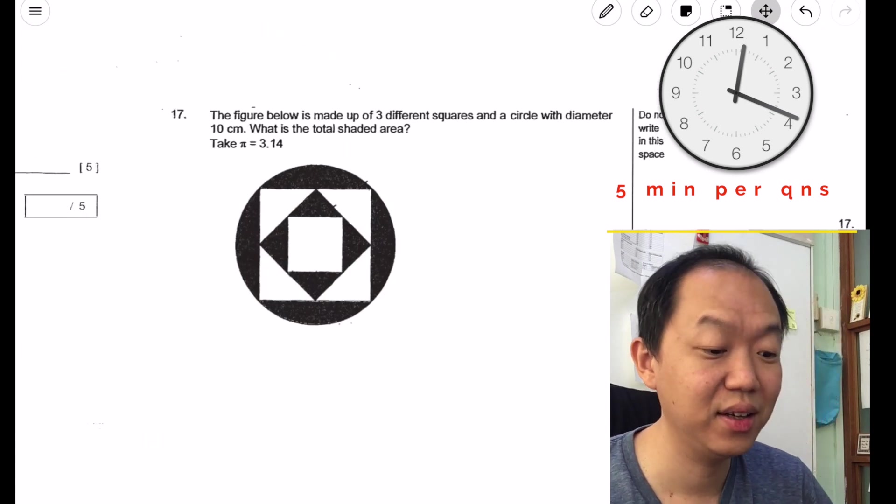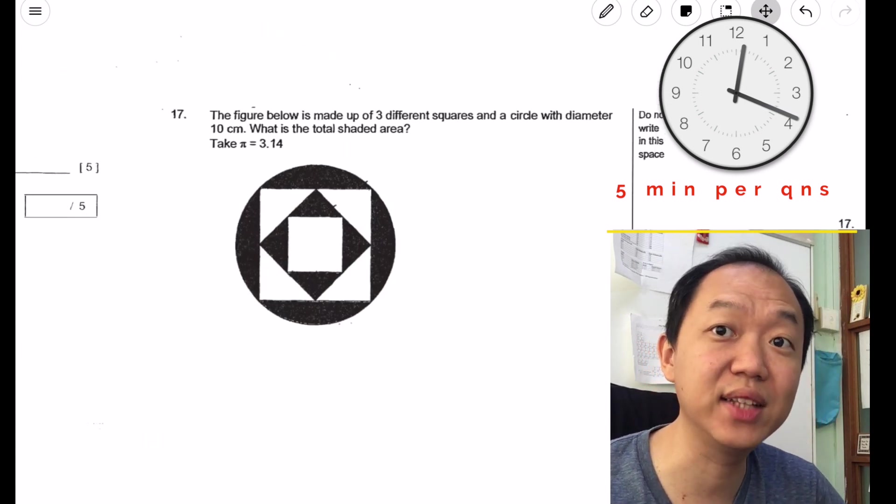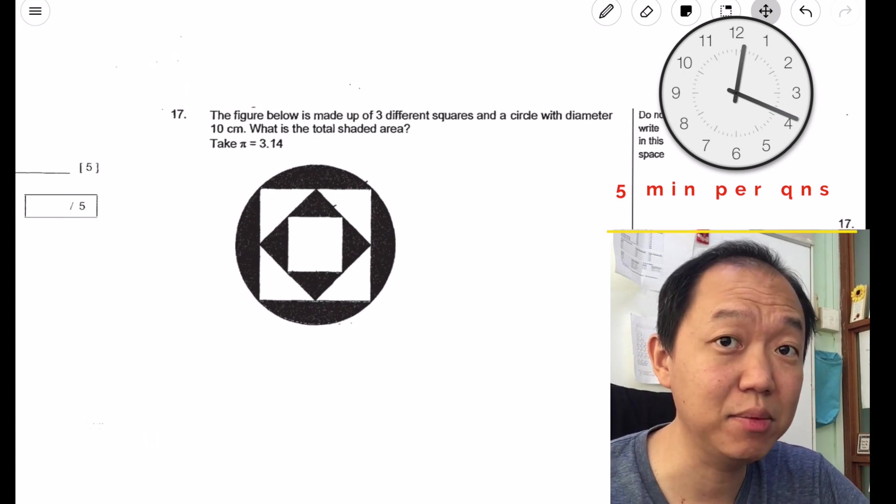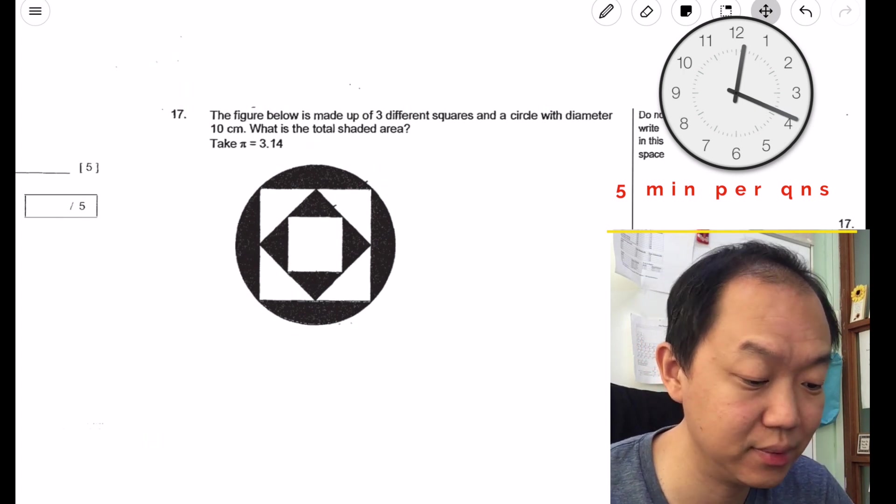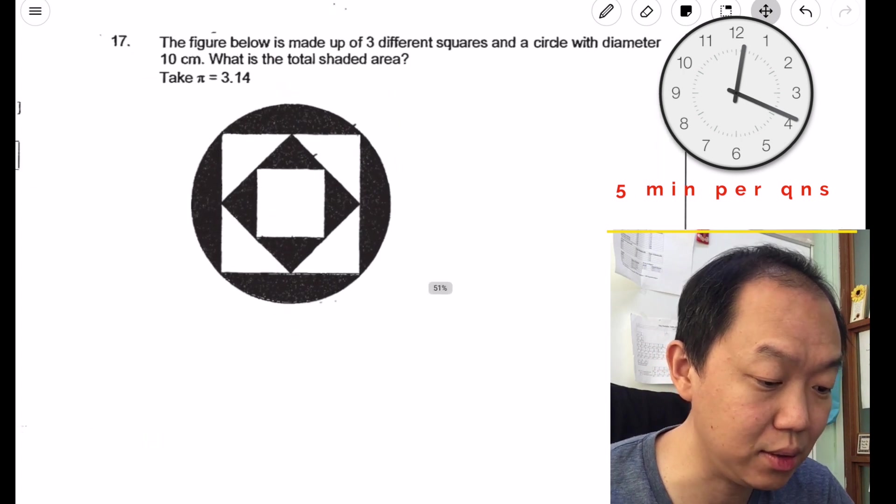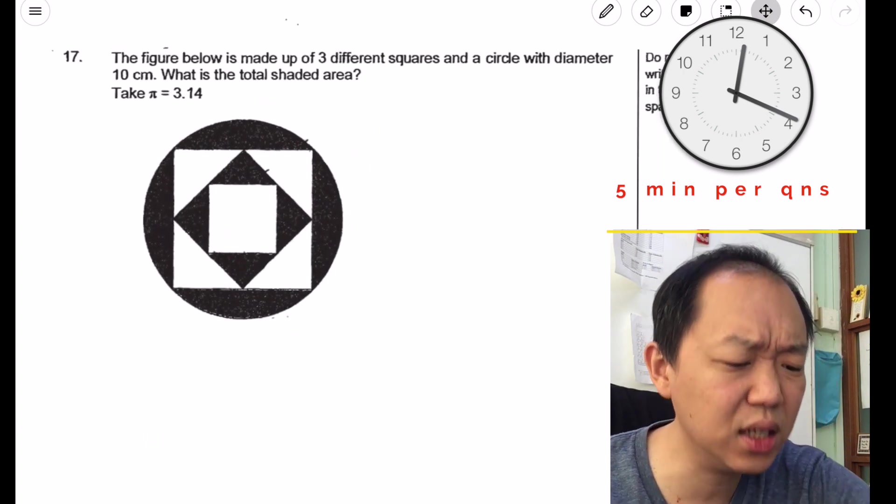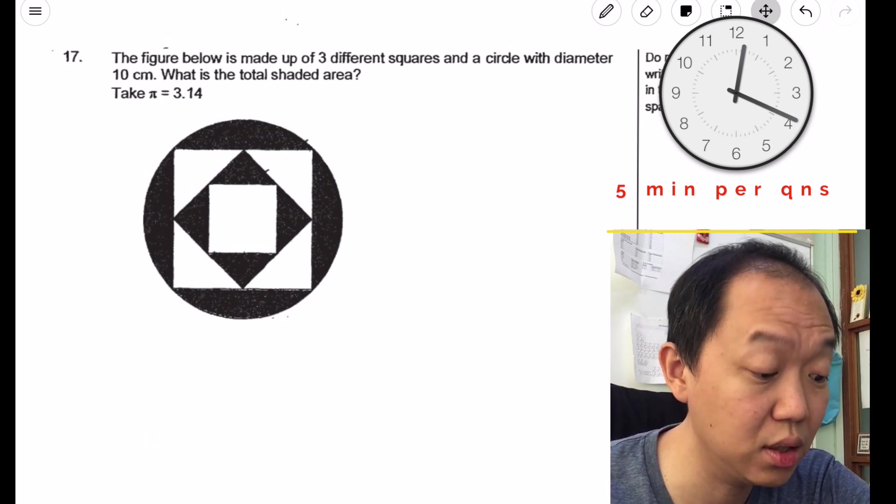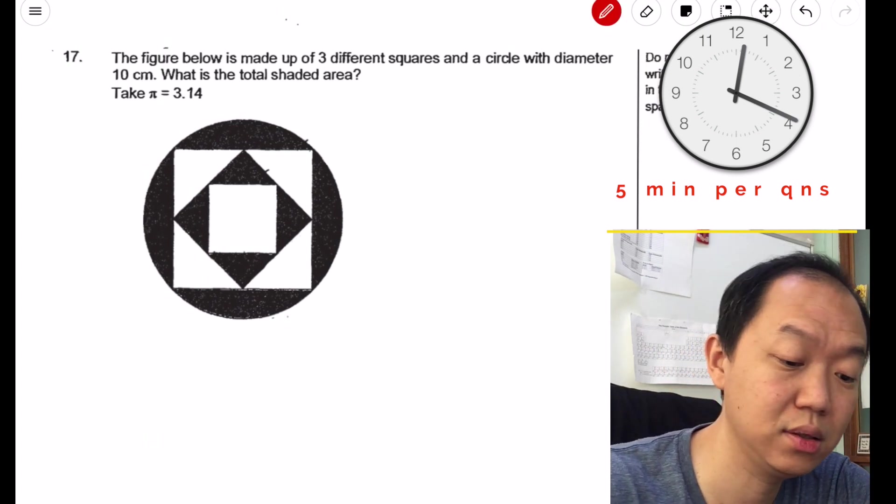Final question. So far I've taken about 18 minutes, so it takes about five minutes per question. Let's take a look at this one. The figure below is made out of three different squares and a circle with diameter 10. What is the total shaded area? What is going on? Three different squares: one, two, three, and a circle.